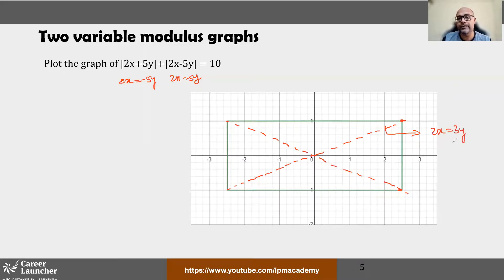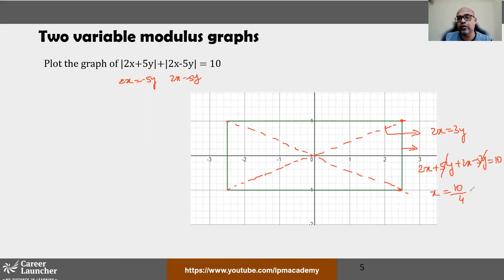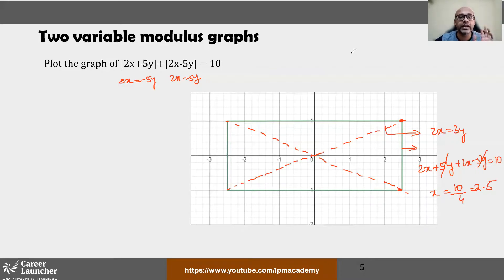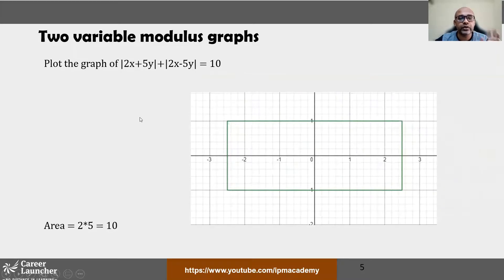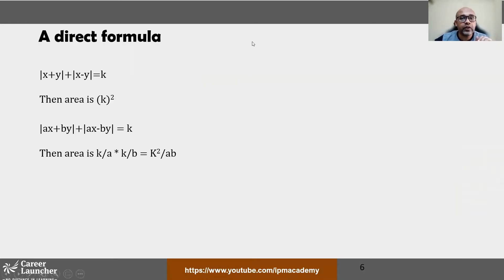The corner points of the rectangle can be found by working through each region. In region one, both moduli are positive, so: 2x plus 5y plus 2x minus 5y equal to 10. The y terms cancel, giving 4x equal to 10, so x equal to 2.5. From x equal to 2.5, you can find the y coordinate using the boundary line equation, and so find all the corner points and side lengths.